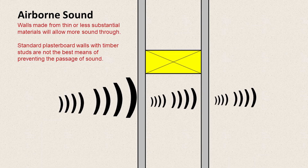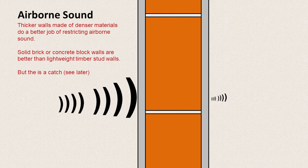If you consider that air can get through a gap, then so can sound. If we make a thin partition — a standard plasterboard wall with a timber stud — it's not the best at stopping airborne sound. There's an air gap within it, and the thickness of the plasterboard isn't substantial, so there's not a lot to stop sound passing through. A thicker wall made of a denser material, such as brick or concrete block, will probably do a better job of restricting sound, but there is a catch which we'll come to later.